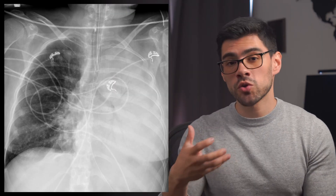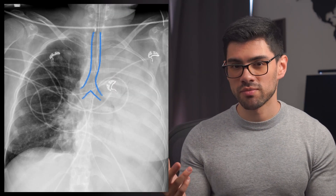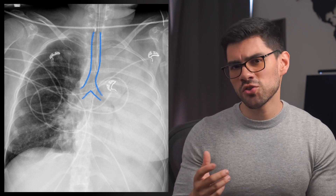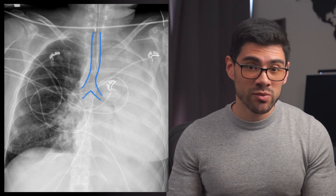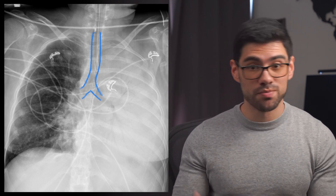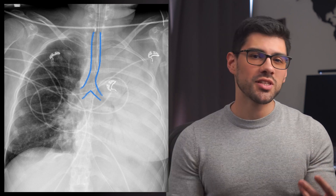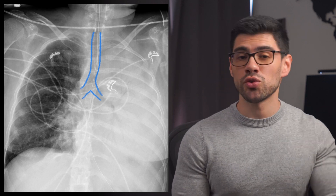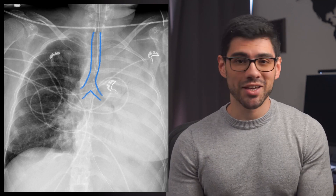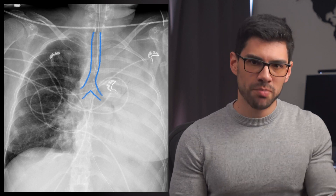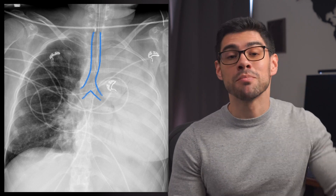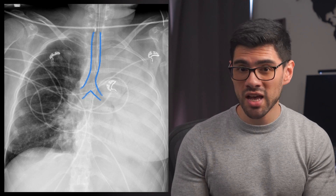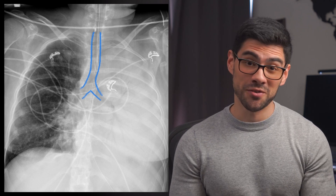The third image has the tracheobronchial tree centered, so we're thinking consolidation. The next question is: consolidation by what? Depending on the case, we would consider pus, water, proteins, blood, or cells. Radiographically, there are not many signs that distinguish these etiologies, so we rely mostly on history and physical exam. We should also consider mixed patterns — two concomitant syndromes simultaneously deviating the trachea in opposite directions, canceling each other out — though this is rare and would not be the first differential to consider.